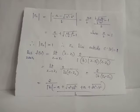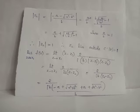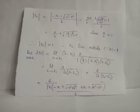Now evaluating |z₂|: since a/b > 1, we have |z₂| = a/b + √((a/b)² − 1), which is surely greater than 1. Since |z₂| > 1, z₂ is a pole lying outside the unit circle.